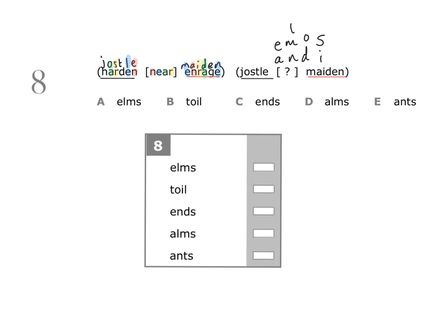So we know our word begins with E or A. We can rule out 'toil'. The third letter has to be O or D, so we can rule out 'elms' (third letter M), 'alms' (third letter M), and 'ants' (third letter T). That leaves us with the word 'ends' as the correct answer. Checking: E, N, D, S — that confirms it. Mark your answer clearly on the answer sheet with a horizontal line next to the word 'ends'.